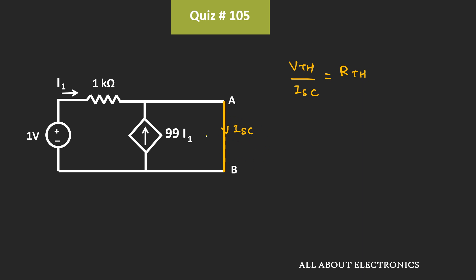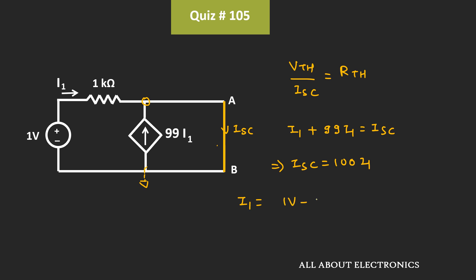To find this short-circuit current, let's apply the KCL equation at this node. If we apply the KCL equation, then we can write current I1 plus 99I1 is equal to Isc. That means this short-circuit current is equal to 100 times I1. Now, let's say this node is the reference node. So when we short-circuit these two terminals, this node will also be at ground potential. Therefore, this current I1 can be given as 1V minus 0V divided by 1 kΩ, that is equal to 1 mA. And hence, this short-circuit current Isc is equal to 100 times I1.